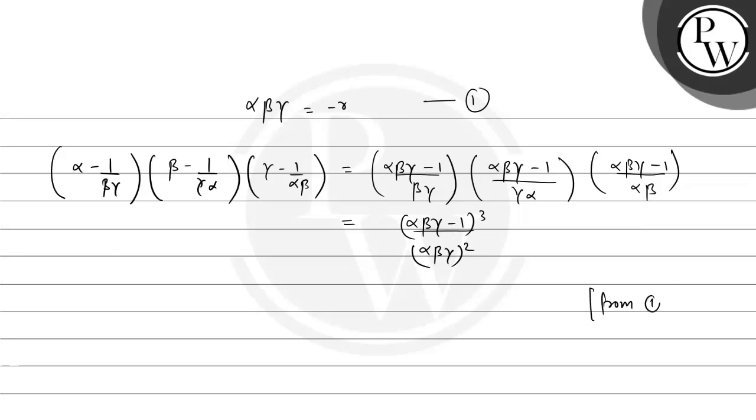From our earlier work, alpha beta gamma equals minus r, so this becomes minus r minus 1 whole cube divided by minus r whole square. Taking the minus common, we get negative r plus 1 whole cube divided by r square.